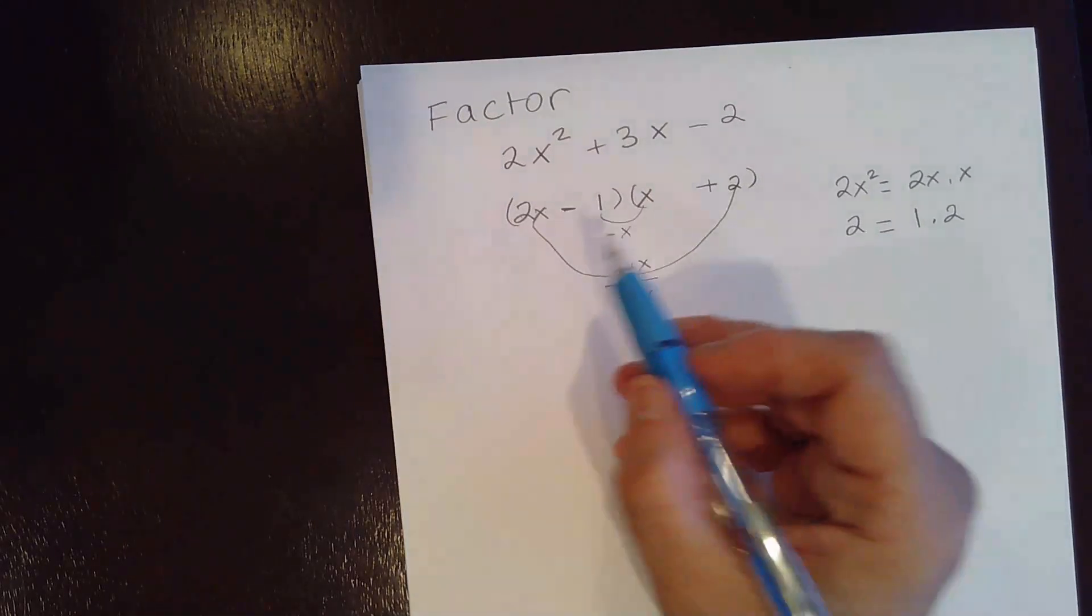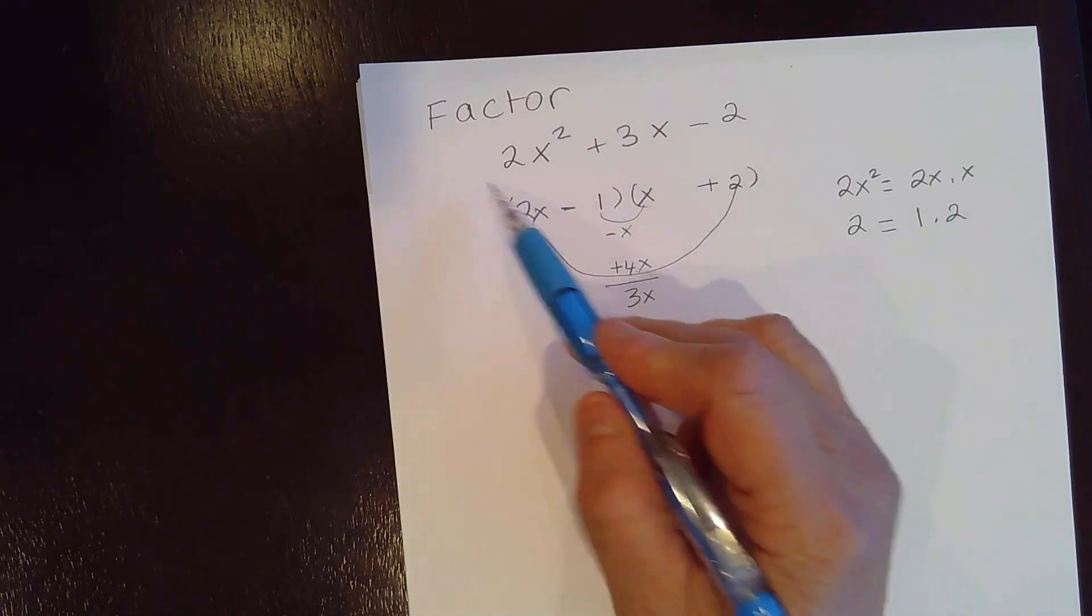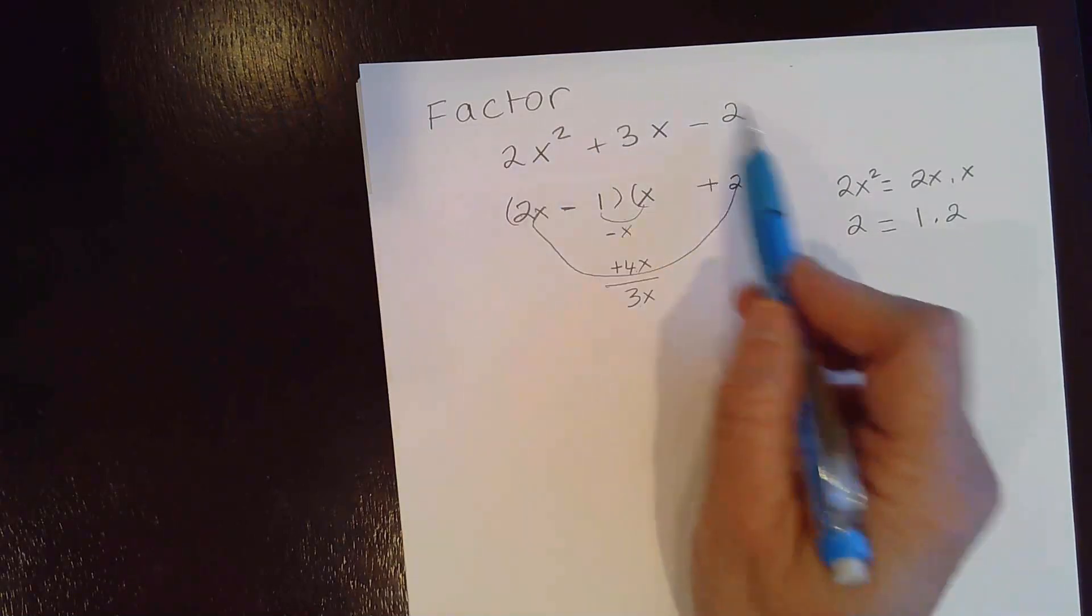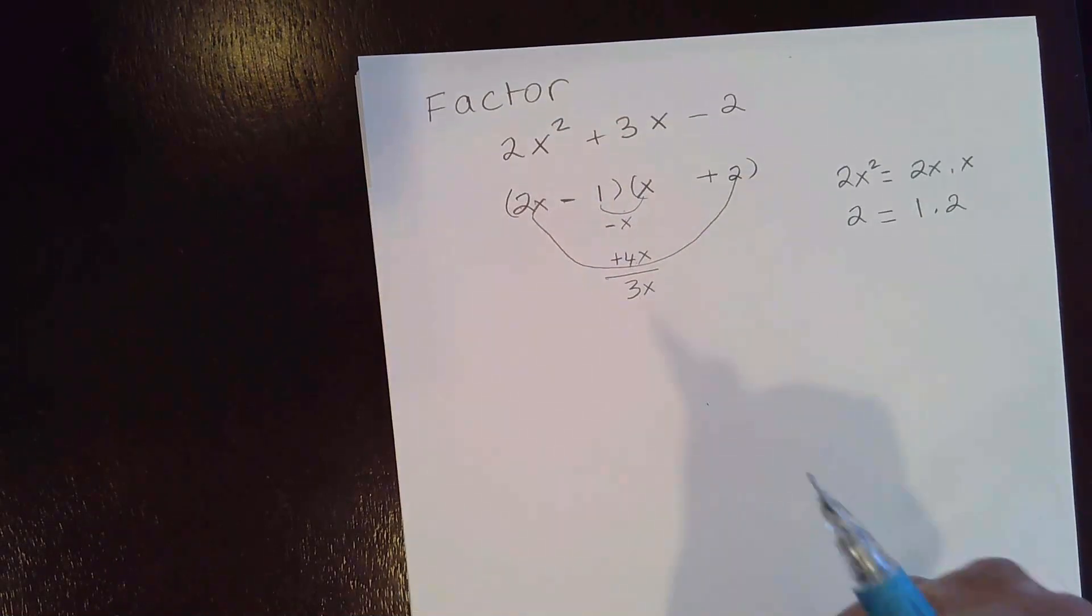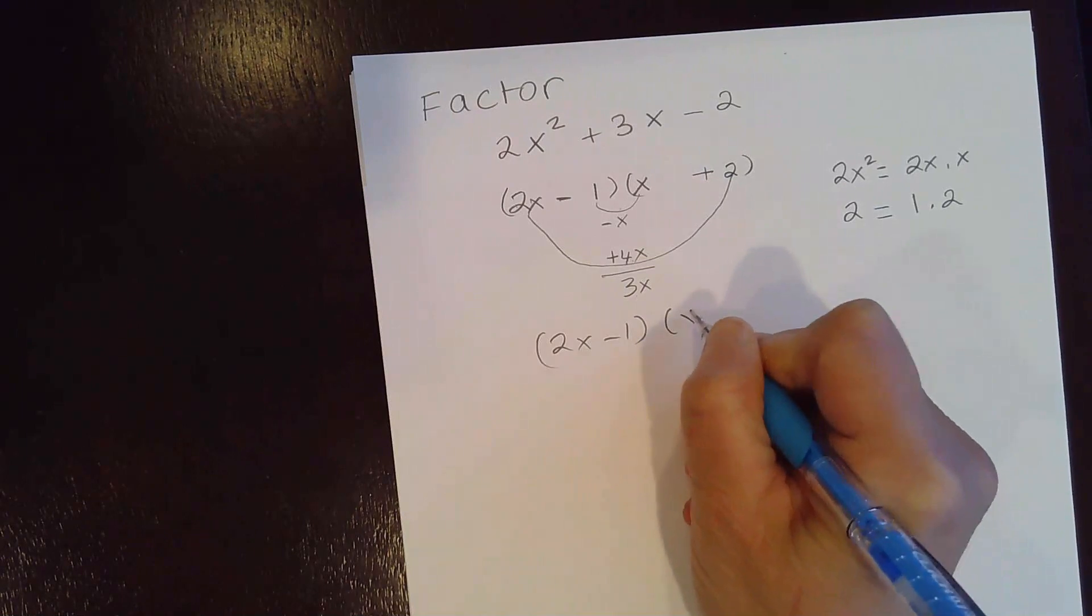You can check it by using FOIL and you will know that you would get this trinomial back. So this is the correct factoring: 2x minus 1 times x plus 2.